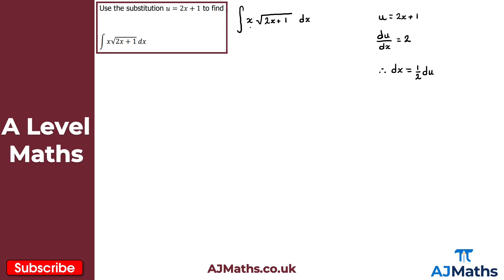We've got two other things to consider: the x at the front and the √(2x + 1). The square root of 2x + 1 is straightforward because u = 2x + 1, so that's simply √u, or u^(½). For x: rearranging the original substitution, 2x = u − 1, so x = (u − 1) / 2.